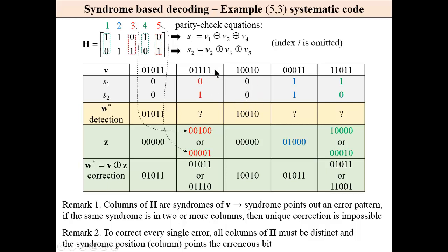For this received word, the syndrome is non-zero. So if we have only detection, question mark. We may go further on and try to correct. We are looking on columns of matrix H. And we can see that in two columns, we have this syndrome, which means that it is impossible to distinguish whether it is an error in the third or fifth bit.